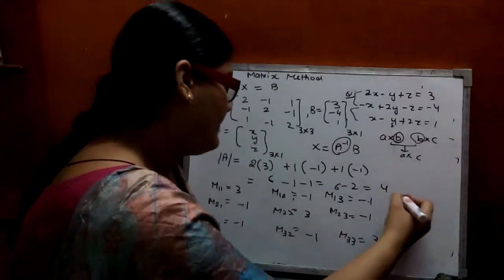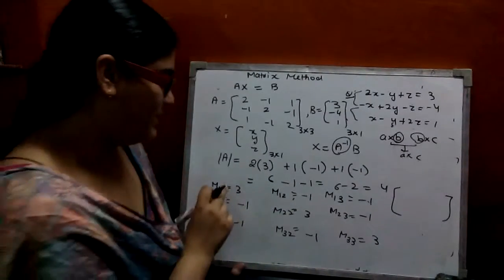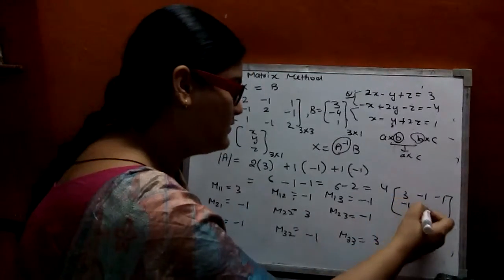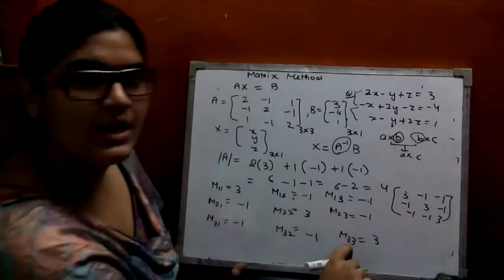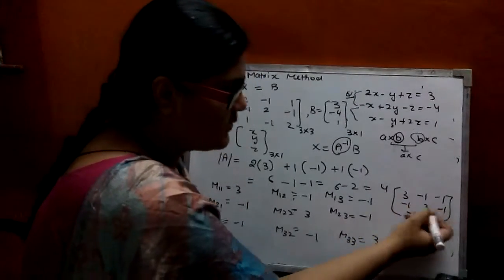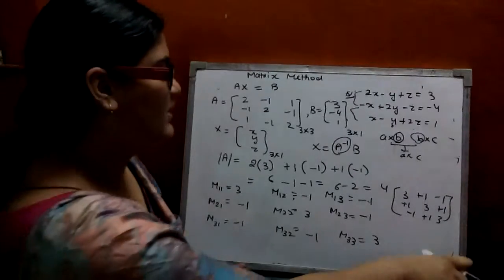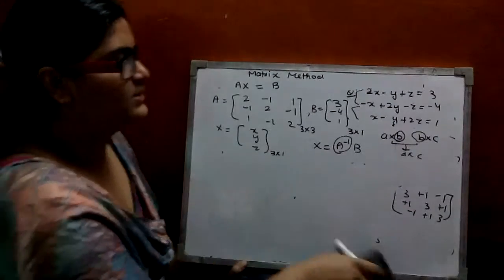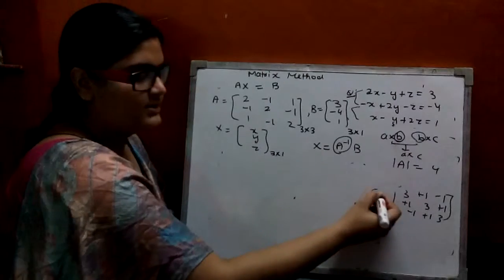So cofactors form the matrix of all the minors: [3, -1, -1; -1, 3, -1; -1, -1, 3]. At odd places you have to change the signs — the sign pattern is plus, minus, plus on the diagonal positions. A determinant is 4. These are our cofactors.